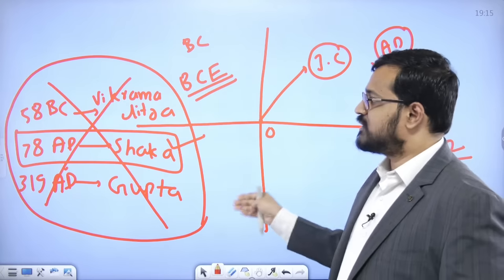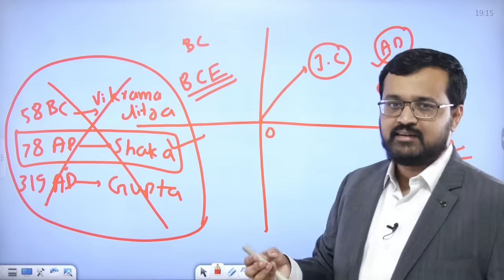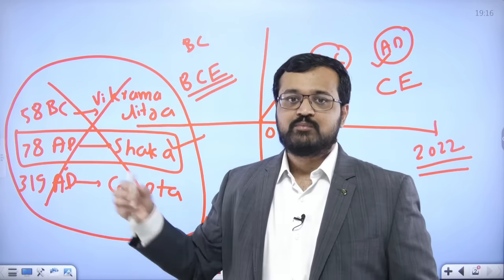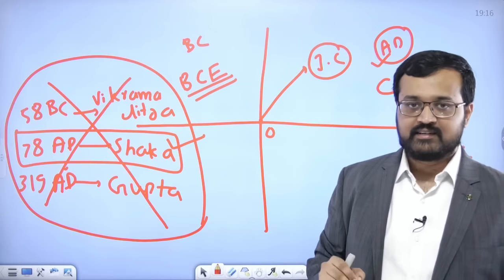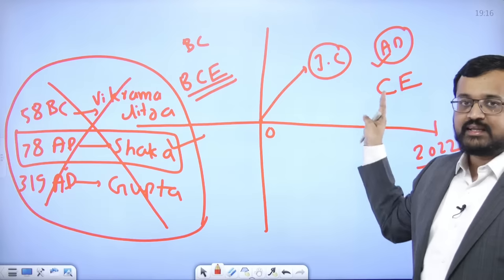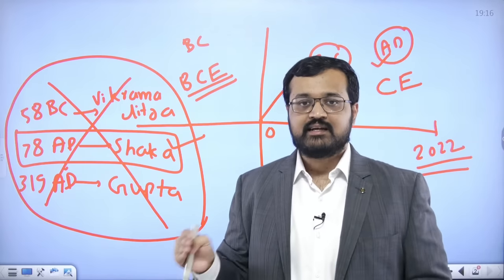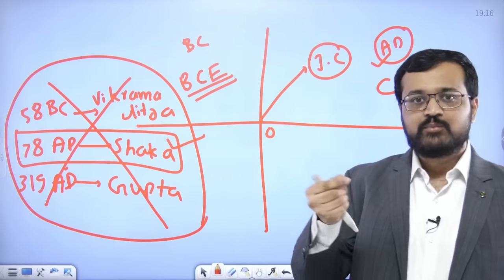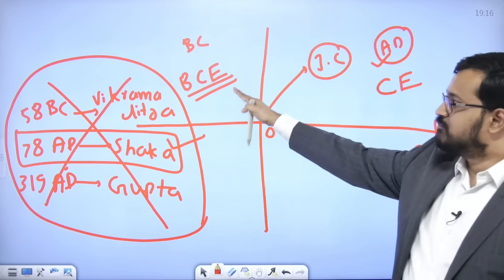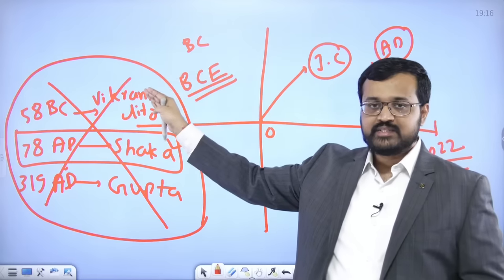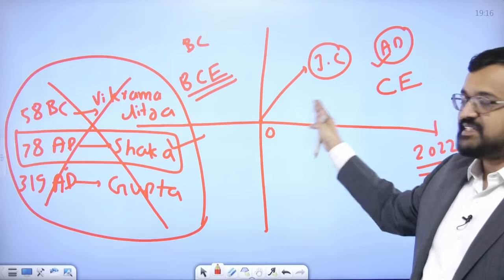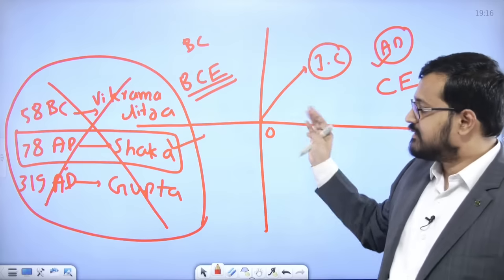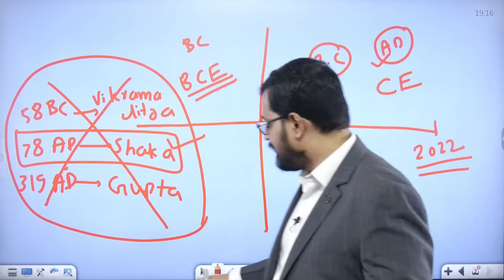You don't need to understand this in too much detail — not much will come from here. This is just for your understanding that the concept of calendar exists. There are multiple calendars — even in India there are more than 15 calendars. The Gregorian calendar is the most widely followed worldwide, and that is why India's entire history has been reconstructed around the Gregorian calendar. Everything before 0 is called Before Christian; everything after 0 is called Anno Domini or the Christian era.